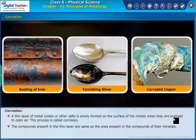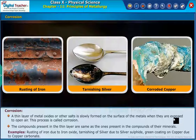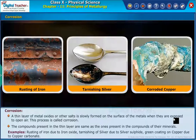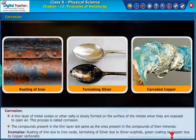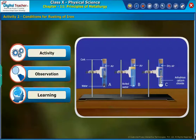Examples of corrosion include: rusting of iron due to iron oxide, tarnishing of silver due to silver sulphide, and green coating on copper due to copper carbonate. Let us do an activity to know the conditions for rusting of iron.